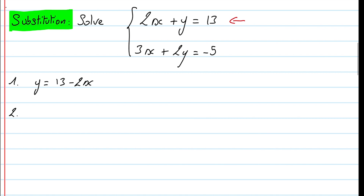Once we've done that, we can substitute this y into the second equation. The second equation becomes 3x plus 2 times the expression we found in the first step, which is 13 minus 2x. We can now simplify and solve this equation.